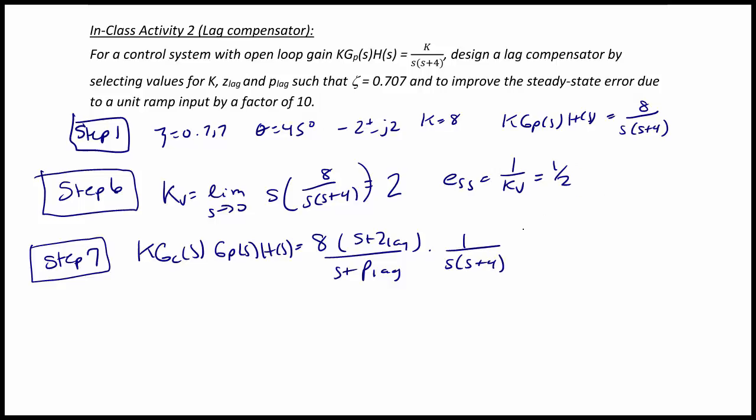So now we know that we want to improve the steady state error by a factor of 10. So that means that our new steady state error should be 0.05 or kv prime is equal to 20. So now we calculate kv prime for our compensated system.